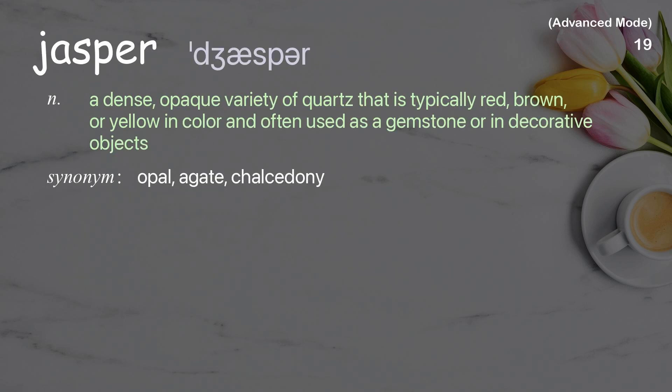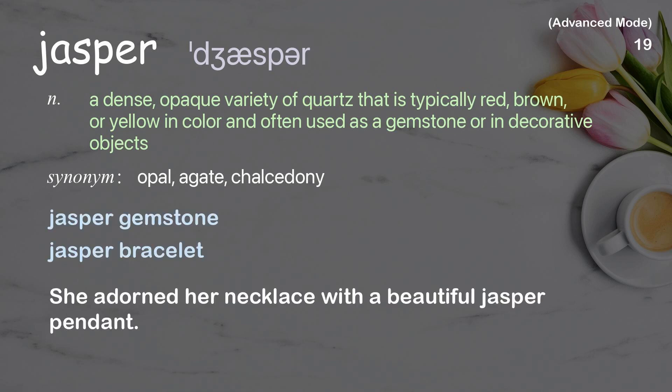Jasper: A dense, opaque variety of quartz that is typically red, brown, or yellow in color and often used as a gemstone or in decorative objects. Examples: Jasper gemstone. Jasper bracelet. 'She adorned her necklace with a beautiful jasper pendant.'